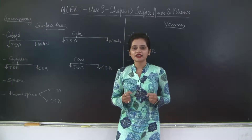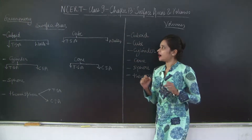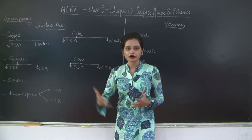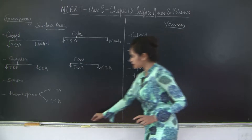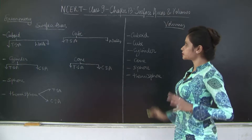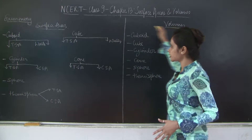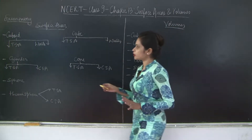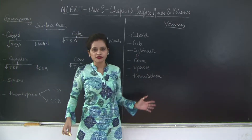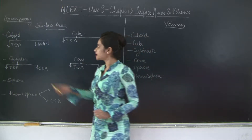Hello students, welcome back. Let us take a look at the final section of Chapter 13: Surface Areas and Volumes — the summary. This summary is going to be more about formulas than theory. As you can see from the title, the chapter is divided into two major sections: surface areas and volumes. We are going to look at the surface areas of the different objects we learnt and their volumes as well. First of all, cuboid — a cuboid is nothing but a rectangular box.